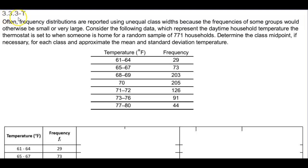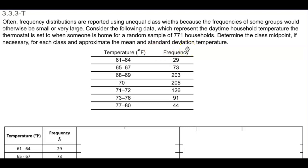Section 3.3.3-T. Frequency distributions are often reported using unequal class widths because the frequencies of some groups would otherwise be small or very large. Consider the following data, which represent the daytime household temperature the thermostat is set to when someone is home for a random sample of 771 households. Determine the class midpoint for each class and then approximate the mean and standard deviation temperature.